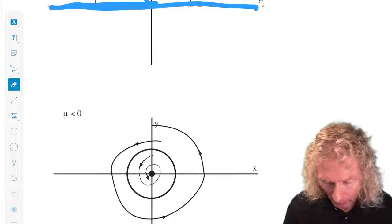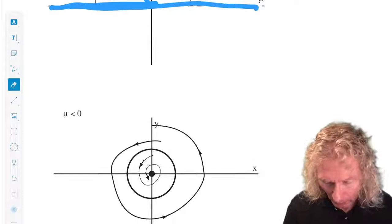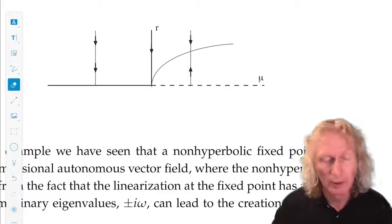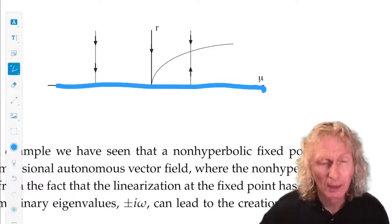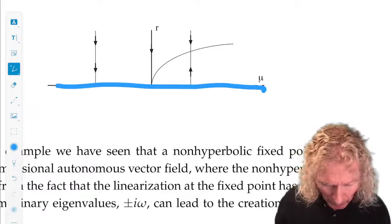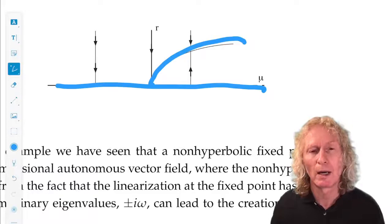So that's for the case a less than zero. Now we go to the other case. We still have the same stability for the origin. It's a sink for mu less than zero. It's a source for mu greater than zero. But for mu greater than zero, it is surrounded by a stable periodic orbit in this particular case.